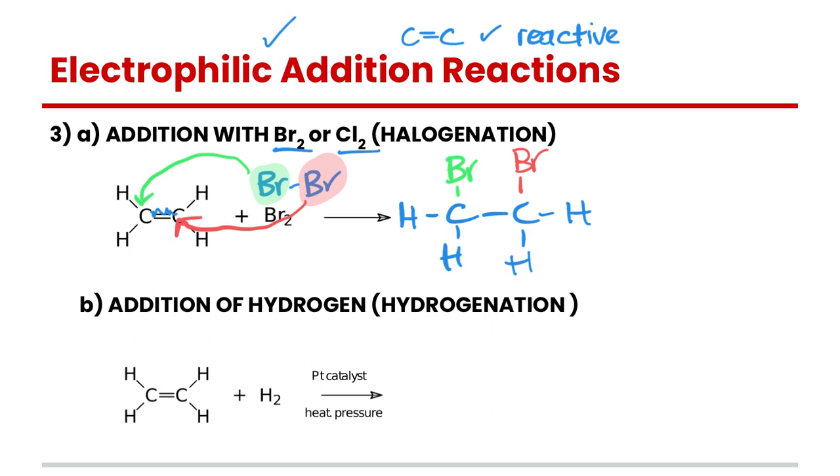The same can happen with chlorine or any other halogen. This has a fancy name halogenation. You don't really need to know that, it's just adding a halogen to a double bond or a triple bond.